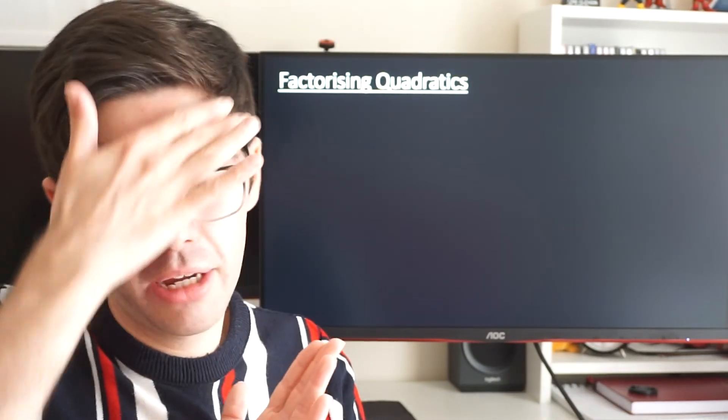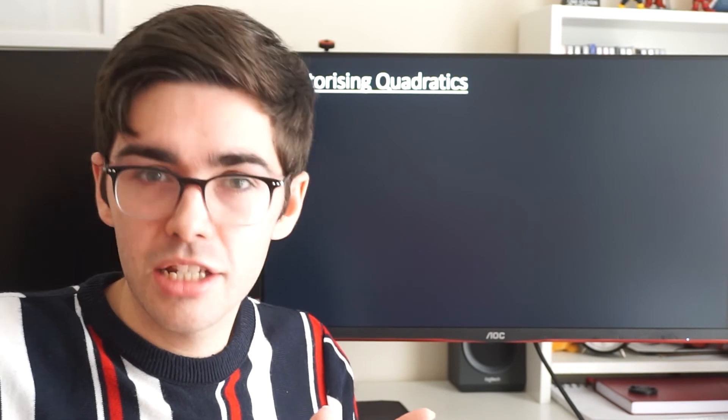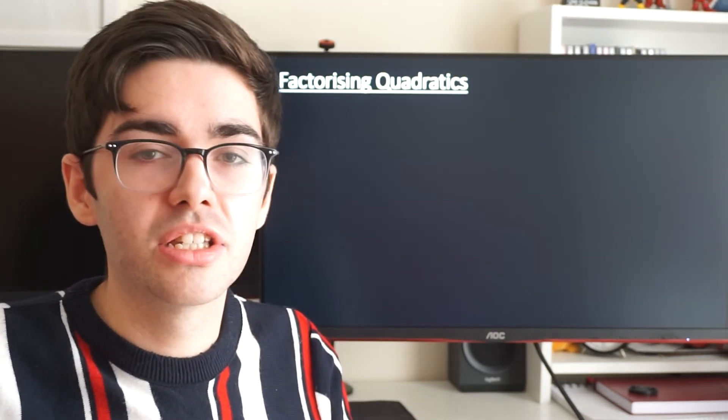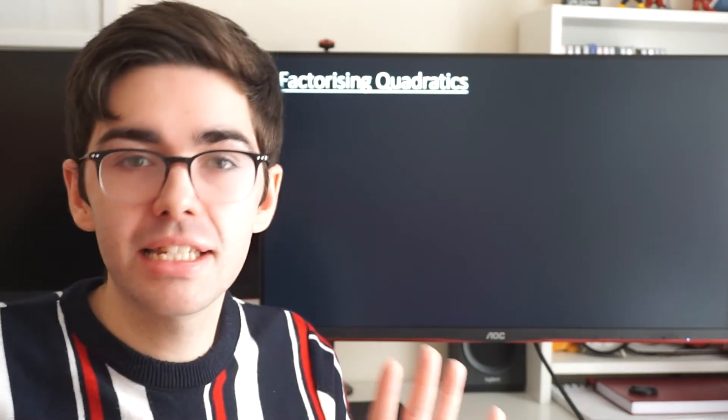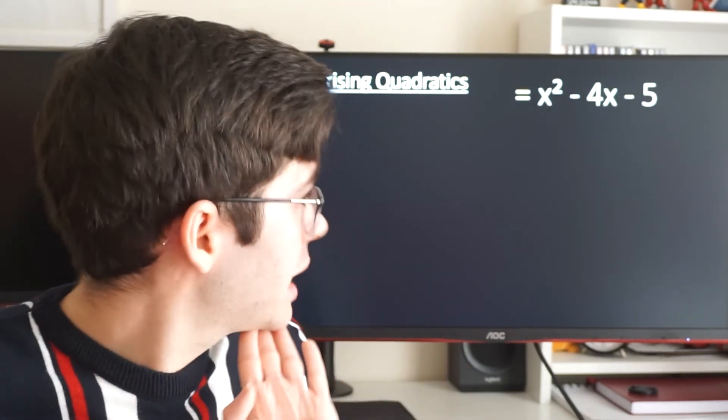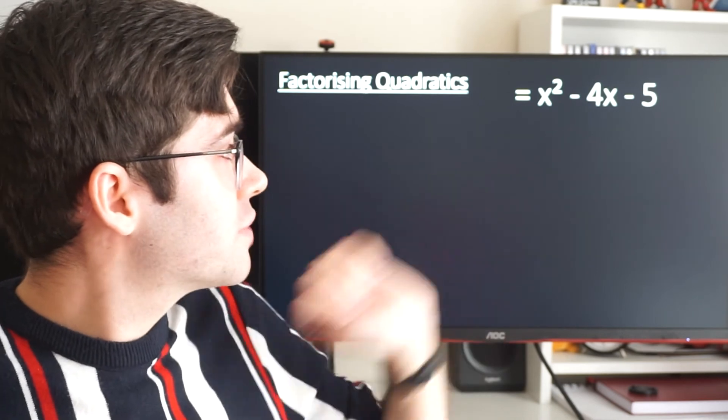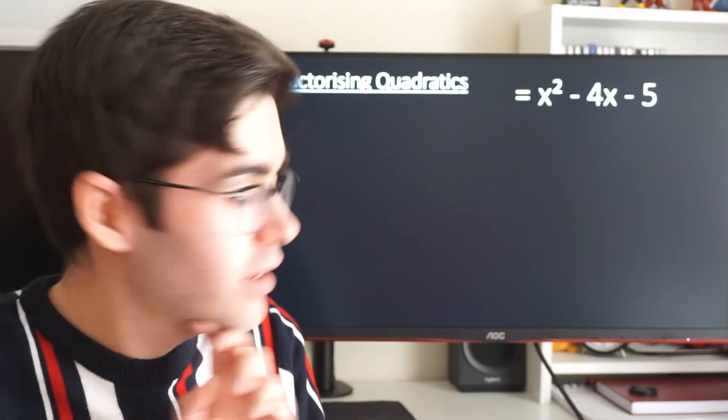So the very last thing we might have to do with quadratic equations is sometimes we might have to factorize a quadratic equation that has negatives in it. The method is exactly the same. Do not panic. So it might look like this: x squared minus 4x minus 5.